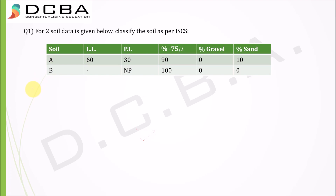Two soil data are given and we have to classify them according to Indian Standard Classification of Soils. Soil A has a liquid limit of 60, a plasticity index of 30, percentage less than 75 microns is 90%, percent gravel is zero, and percent sand is 10%. For Soil B, no plasticity index or liquid limit is given, percentage less than 75 microns is 100%, gravels are zero, and sand is zero.